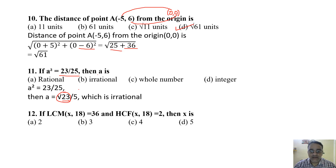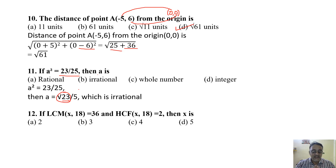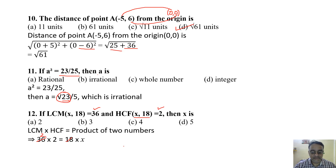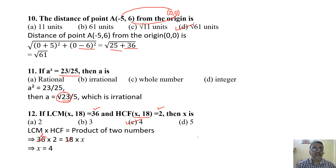Question 12: If LCM of x and 18 is 36 and HCF is 2, then x is. Using the property: LCM × HCF = product of the two numbers. So 36 × 2 = x × 18, giving x = 72/18 = 4. The correct answer is option C.